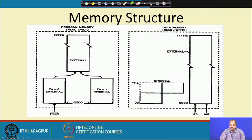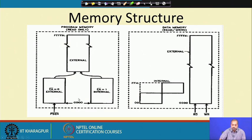Looking at the memory structure: the total address space for 8051 is 16-bit, ranging from 0000h to FFFFh. If EA bar is equal to 1, we are accessing from internal memory; if EA bar is equal to 0, it accesses external memory. For data memory, 00h to FFh (128 bytes) is internal, and from that point onwards it accesses external memory.